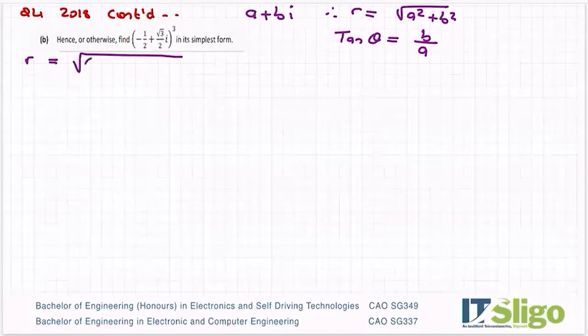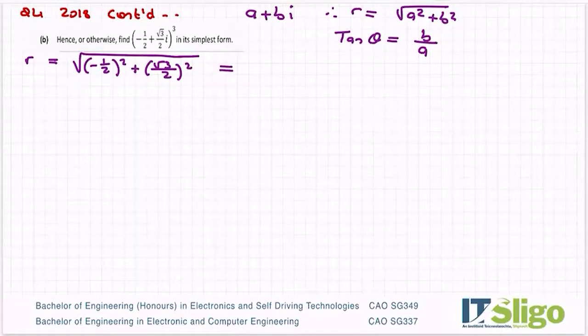That's my a, that's my b, so let's figure that out. So R is equal to the square root of minus a half squared plus root 3 over 2 squared. So let me grab my calculator and figure out what that is. And I have got 1 for that.